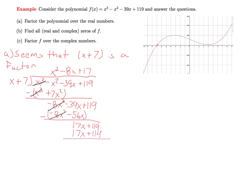When we subtract, everything cancels and we get a remainder of 0. So that checks out. x plus 7 is indeed a factor of this polynomial.